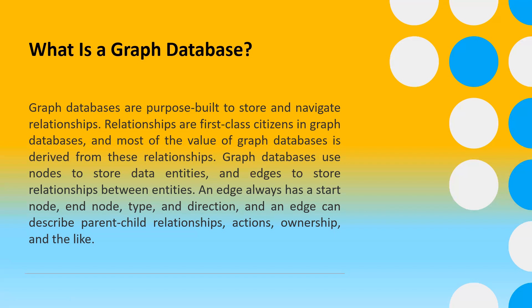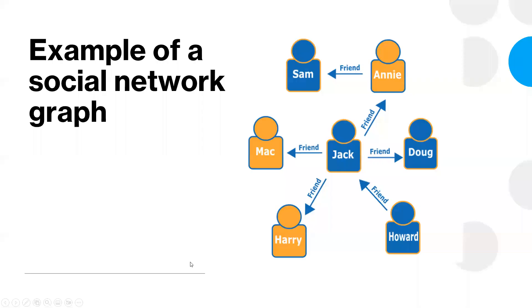Social networking is a great example — LinkedIn, Facebook, and Instagram are all social networking apps. Here is an example of a social network graph: Sam is a friend of Annie, Jack has multiple friends like Mac and Harry, but he is also connected to Annie, and Annie is connected to Sam, so somehow Sam is also connected to Jack. This perfectly illustrates why social networking apps are a great example for graph databases.